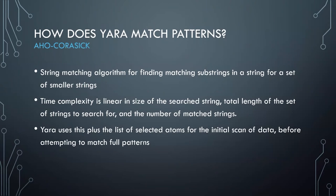For the initial matching, YARA uses Aho-Corasick matching, which is linear in the size of the search string, linear in the total length of strings to search for, and linear in the number of match strings. If you have an atom of four zeros and it matches basically half the entire file, that's going to cause a big performance hit — and an even bigger one when it triggers the secondary pattern matching for the rest of each of those patterns.